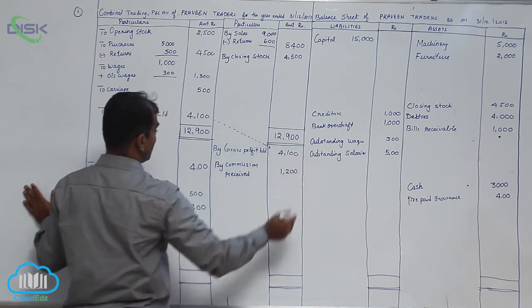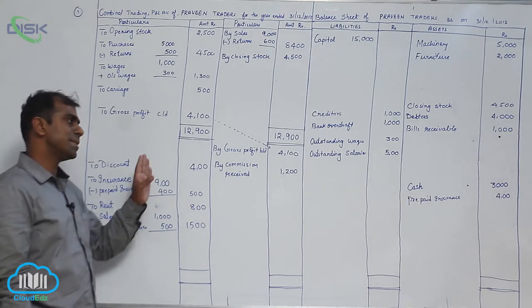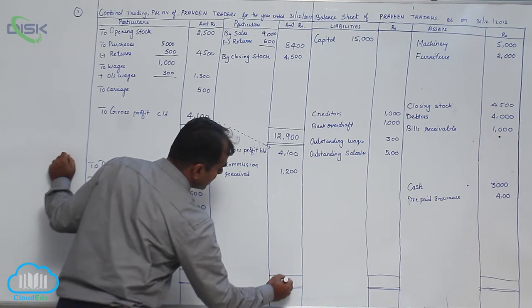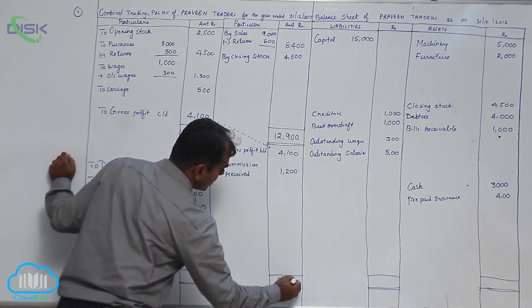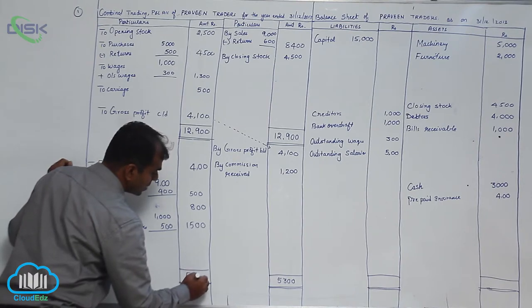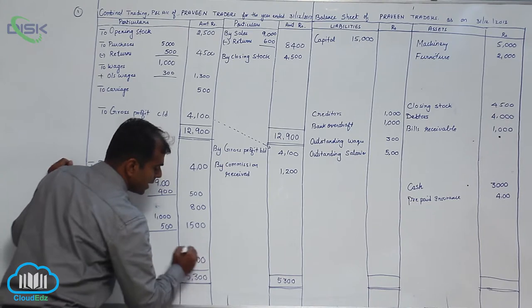Let us balance our P&L account now. Again, let me see the totals of both sides. The credit side total is more, which is coming to $5,300. Now, $5,300 when you minus all these amounts, you are getting your net profit as $2,100.